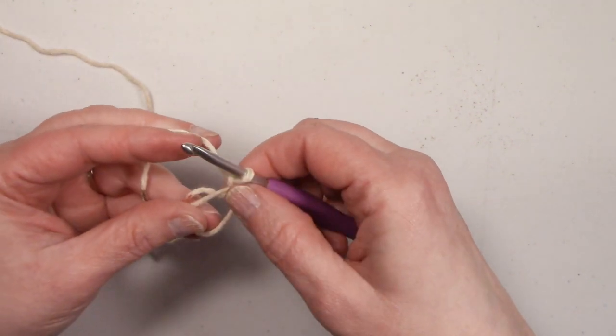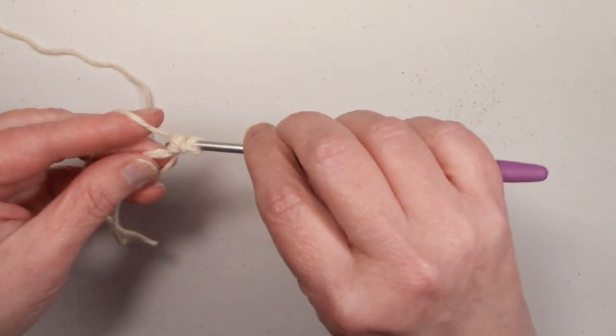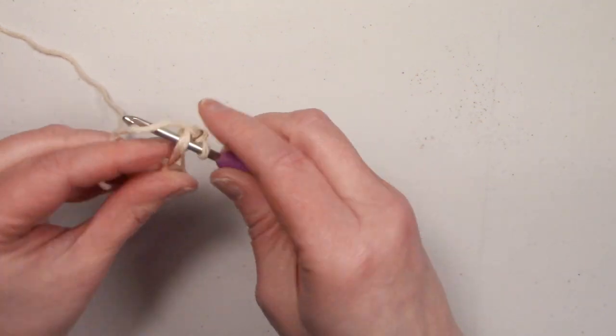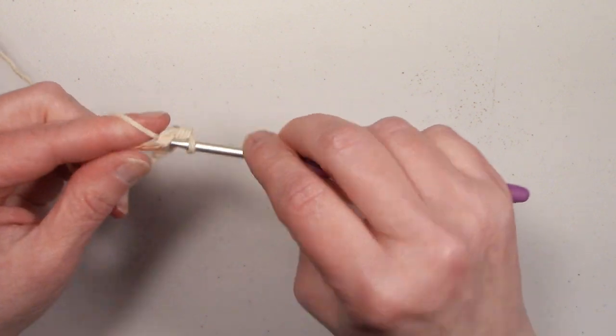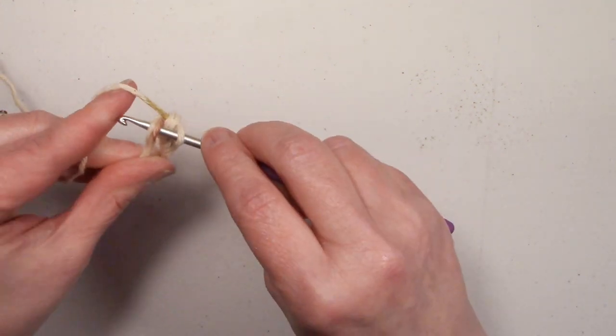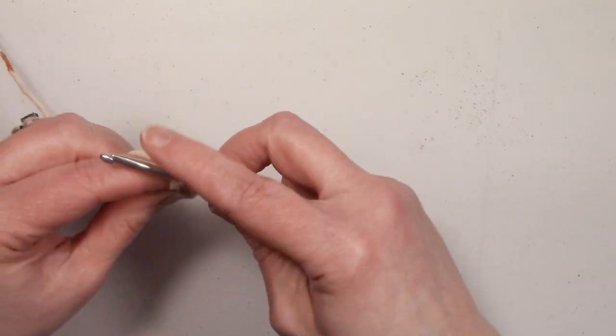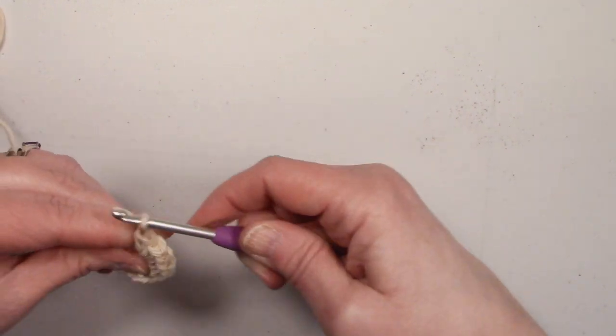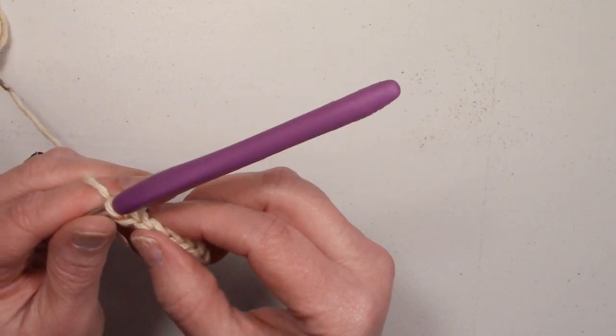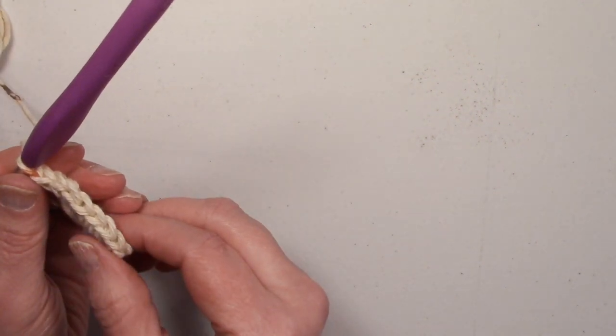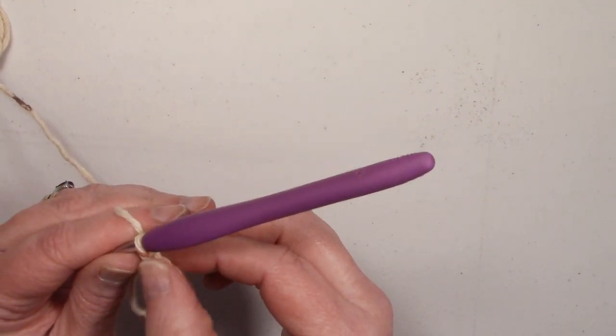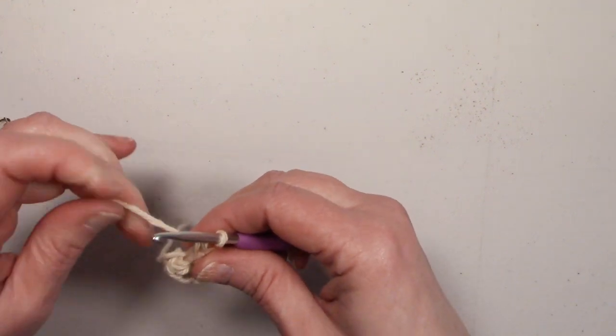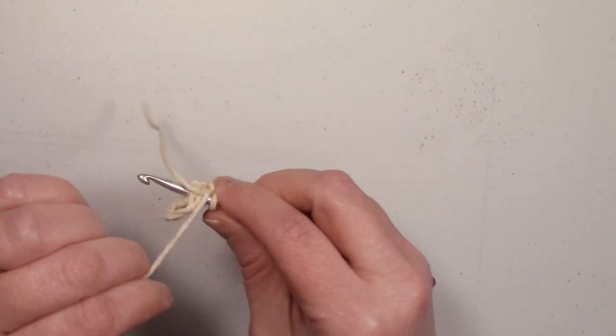Now, since we're doing single crochets, we do not need to chain any more. And we're going to place eight single crochets into the magic ring. And I do apologize about the little chatter in the background. That is my little white rats that are messing with their water bottle. One, two, three, four, five, six, seven, eight. Okay, cinch up the magic ring. And slip stitch to the first single crochet.